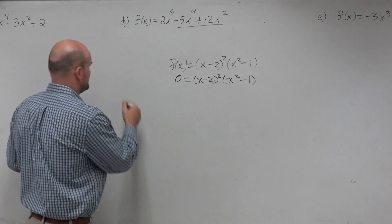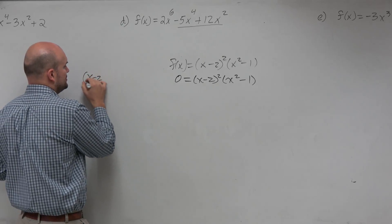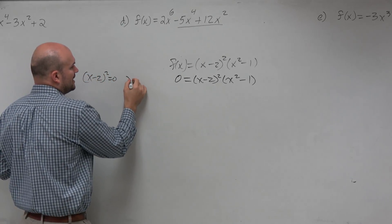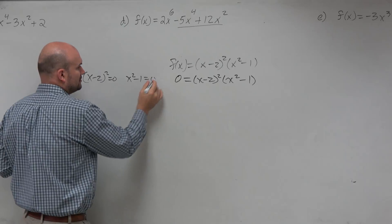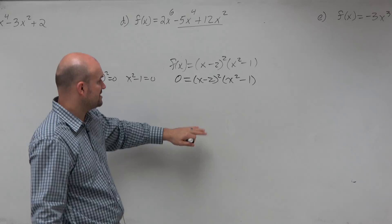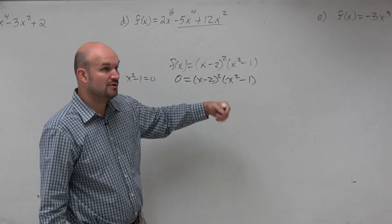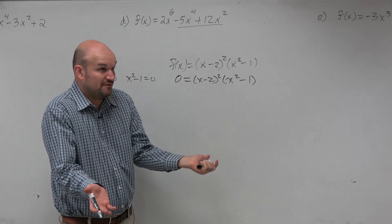Now, from this point, a lot of students will just go ahead and apply the zero product property. So we can set x minus 2 squared equals 0 and x squared minus 1 equal to 0. Some students will try to find the zeros from here. They'll shortcut it and say the 0 is 2 and the zeros are 1, both with the multiplicity of 2. But you've got to understand, the powers are at different places.